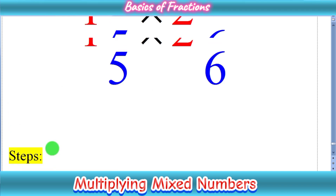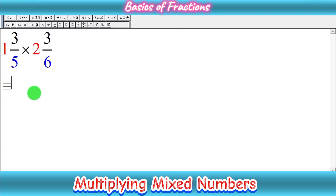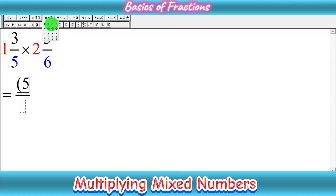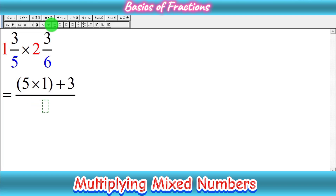So let's start our question: 1 whole 3 upon 5 times 2 whole 3 upon 6. In the first step, we have to convert both mixed numbers into improper fractions. The method is very simple — multiply the denominator with the whole number. So 5 times 1, then add the result with the numerator 3. So 5 times 1 plus 3, keeping the denominator as 5. Now we can move to the second fraction.